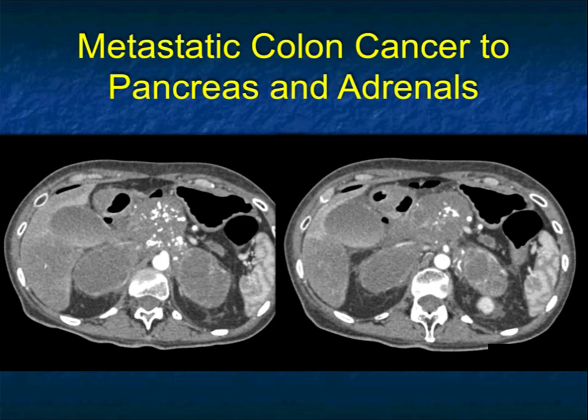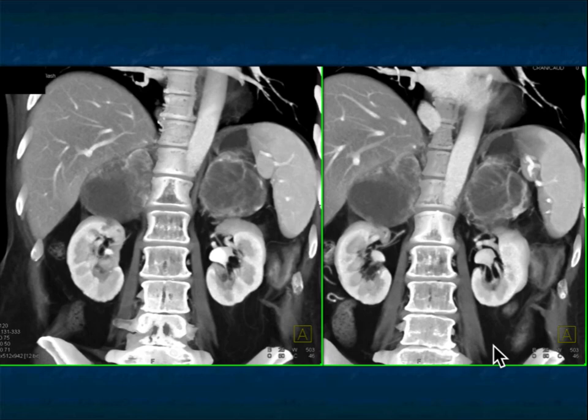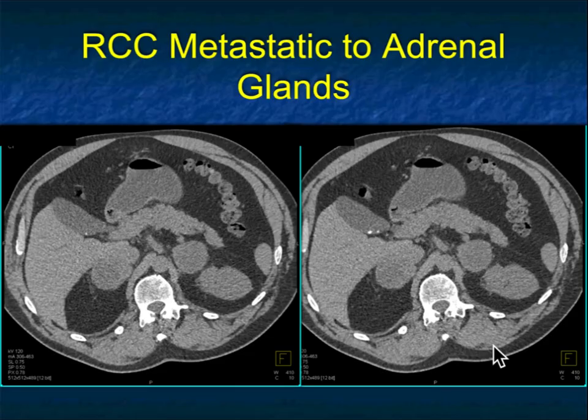For many of the metastases to the adrenal gland, you really can't tell the primary unless you see the rest of the image and find the primary. Here's a patient with metastatic colon cancer. You can see mets to the region of the pancreas and large bilateral adrenal masses. We don't typically think about colon cancer as metastatic to adrenals, but it does occur. These were particularly large and impressive. You can see the tumors are necrotic with some vascularity, but the major feature is necrosis on the volume rendered images.